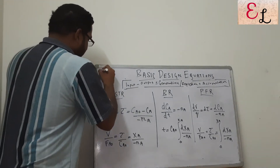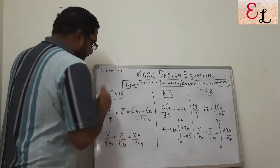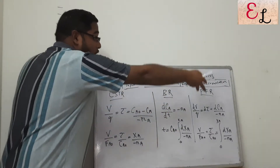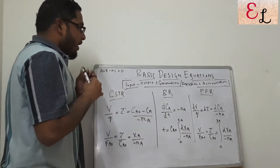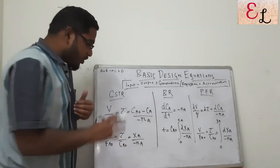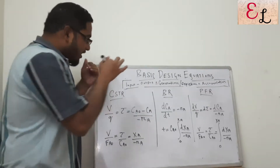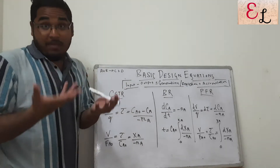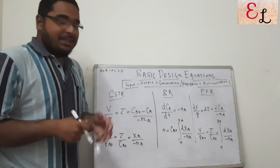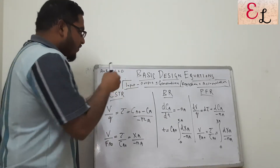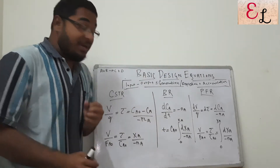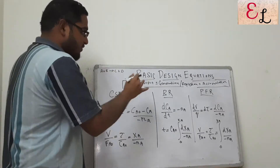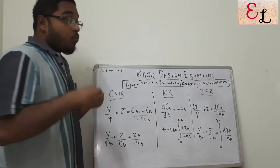Let us consider the basic reaction A plus B forming C plus D, and thereafter discuss the basic design equations for designing a CSTR, a BR, or a PFR for that particular process. Most people want to know the trick and not the full derivation, but if you want me to derive the same, I can do that. These are the equations you need to design these equipments in any industry, so let's talk about the origin of those equations.